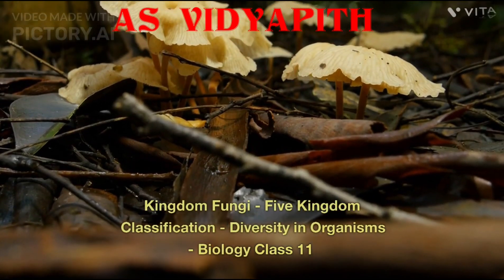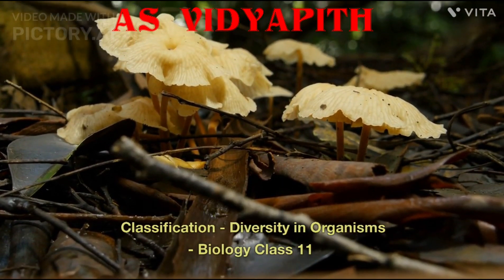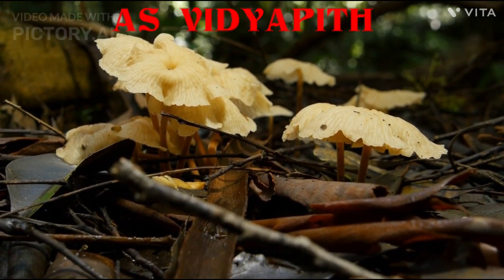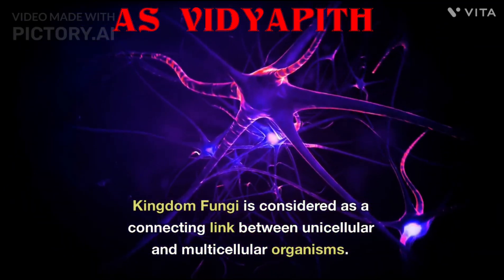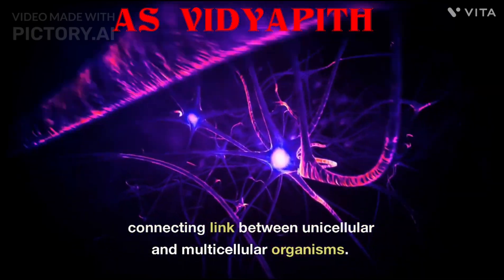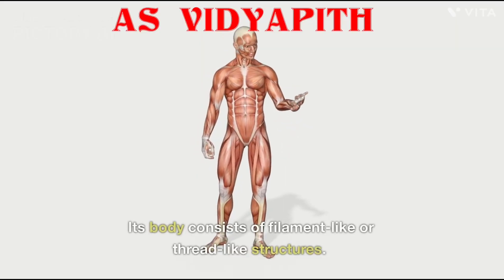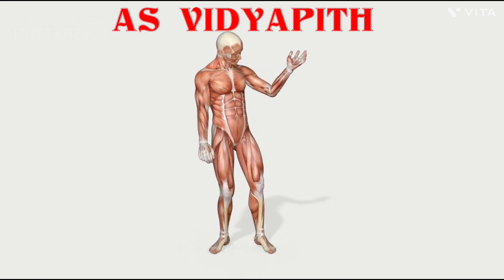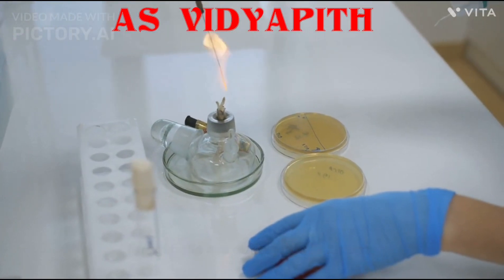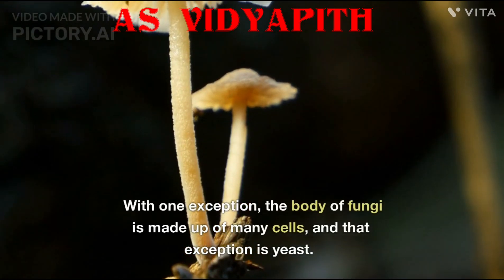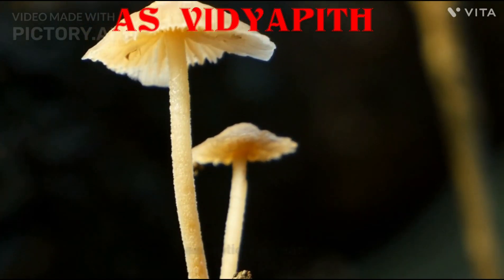Kingdom Fungi — Five Kingdom Classification, Diversity in Organisms, Biology Class 11. Kingdom Fungi is considered a connecting link between unicellular and multicellular organisms. Its body consists of filament-like or thread-like structures. Fungi cells are eukaryotic in nature. With one exception — the body of fungi is made up of many cells — and that exception is yeast.